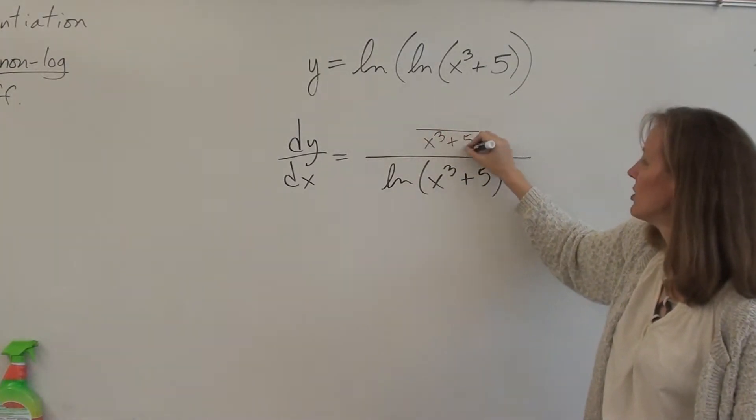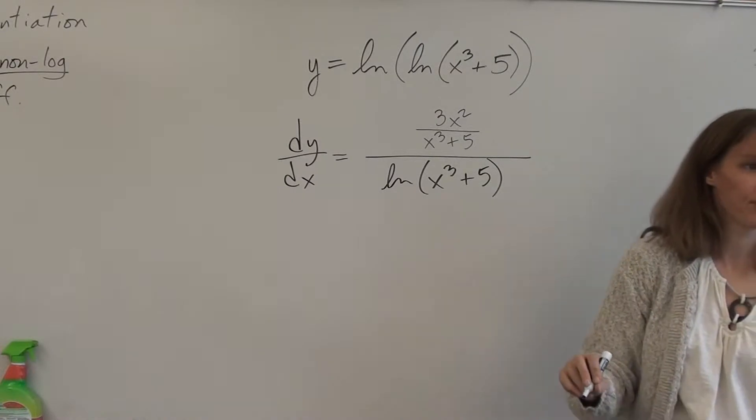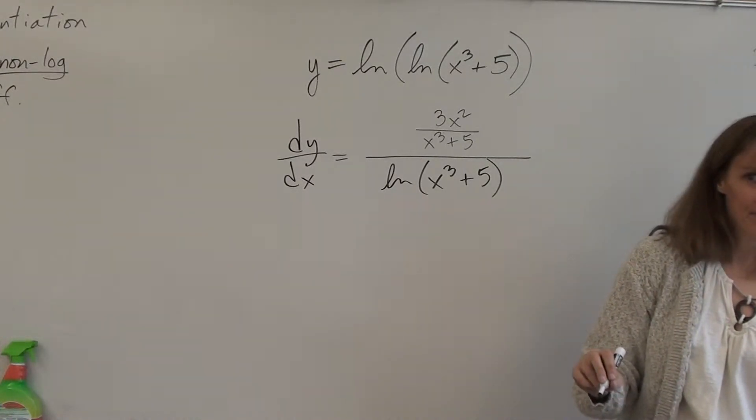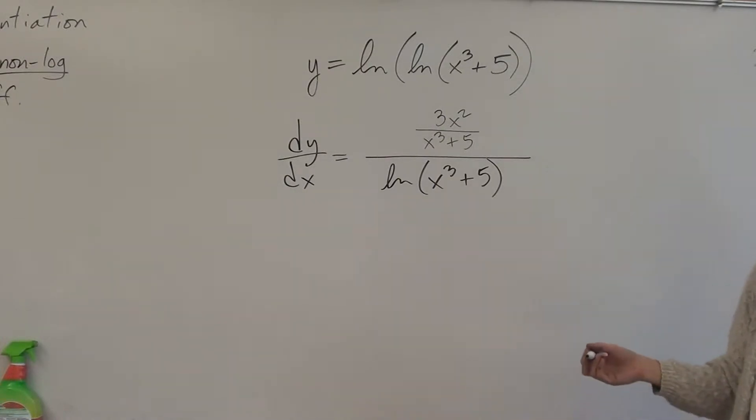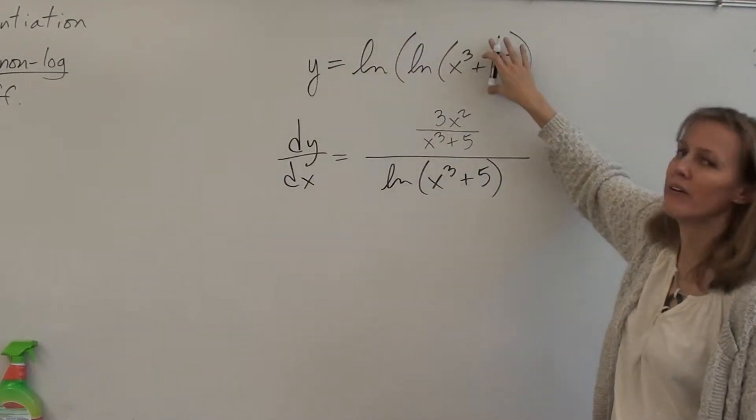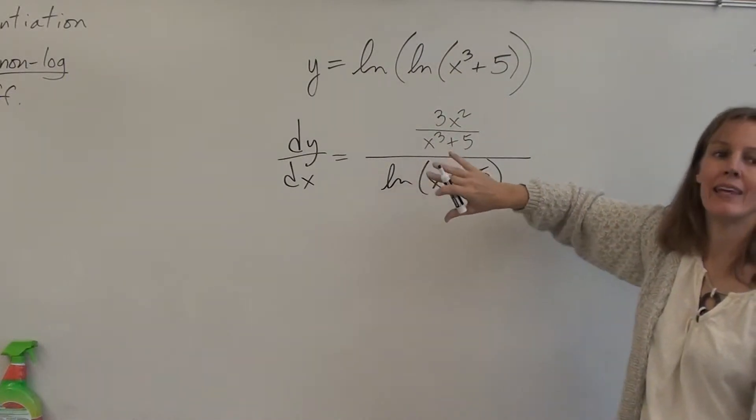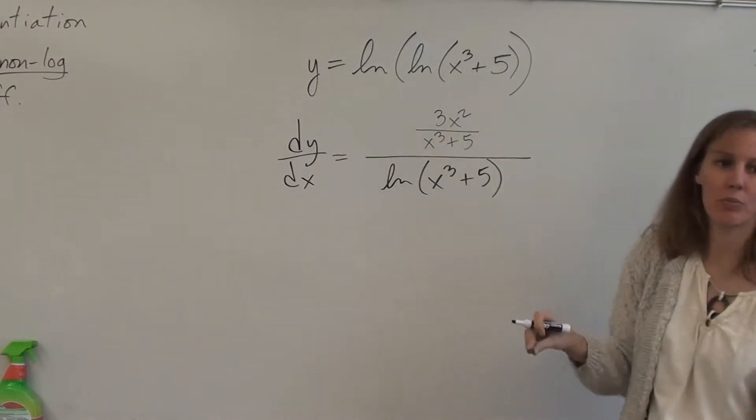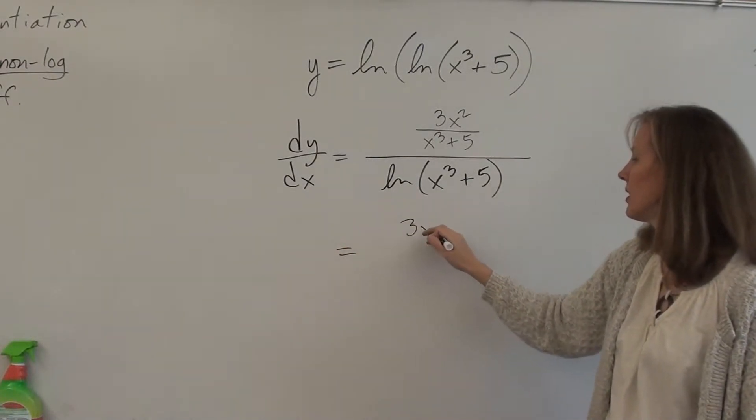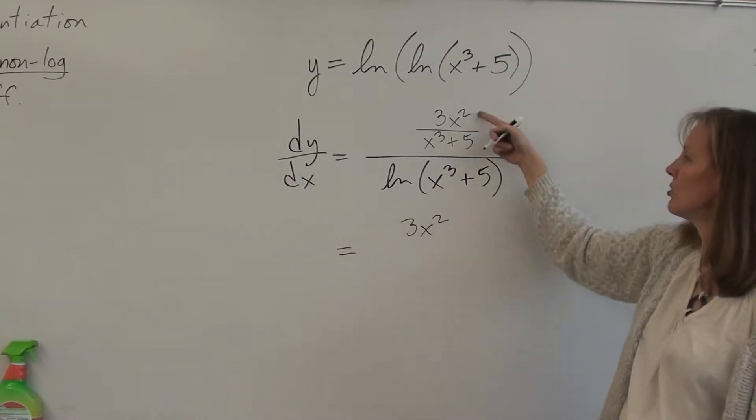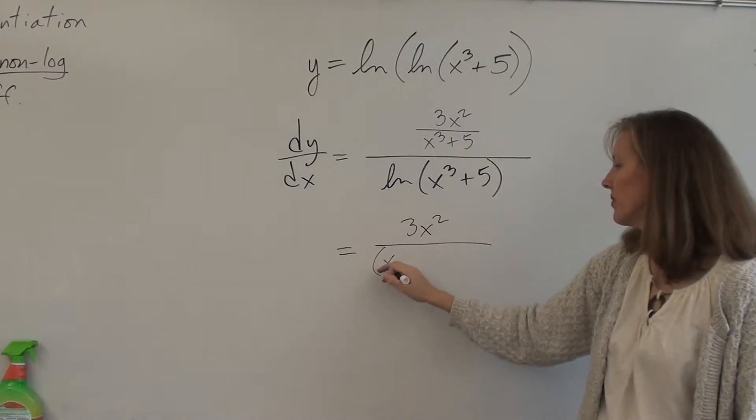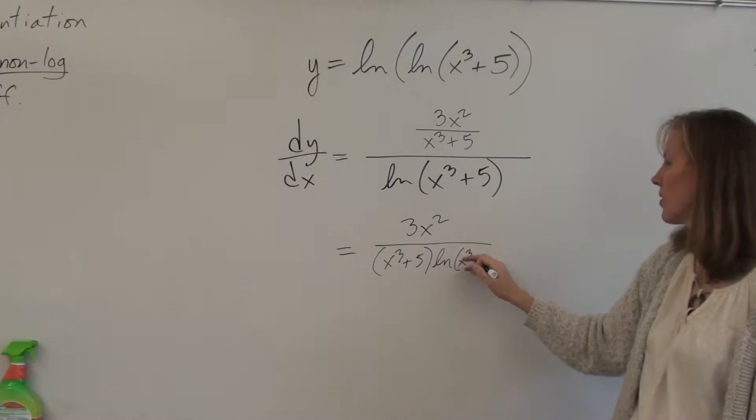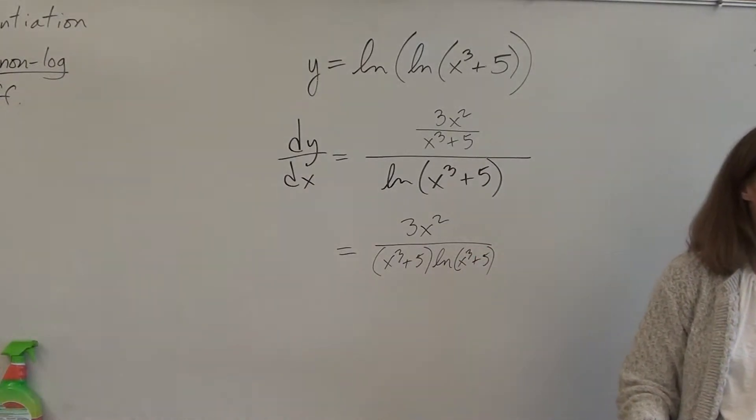3x squared. Argument goes on the bottom. Derivative goes on top. Complex fraction. Oh, that's fancy. Would that natural log of x cubed plus 5 go to the numerator or the denominator? It would go to the denominator. All right, and there you have it, folks. That's the way the cookie crumbles. Does that make sense?